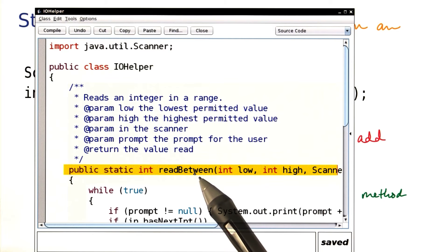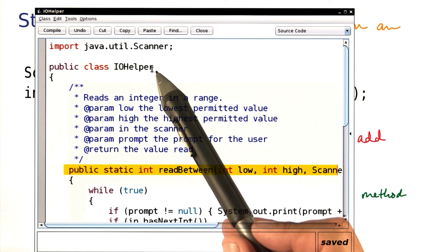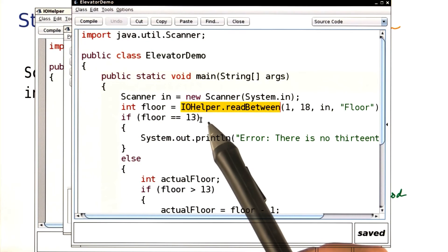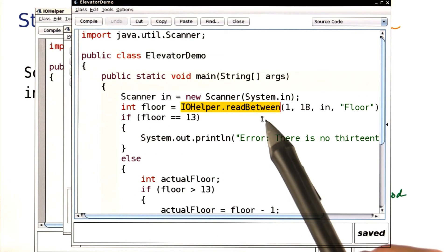That means when I call the method, I have to specify the name of the class, like this. Here you see the name of the class, IO helper, the name of the method.